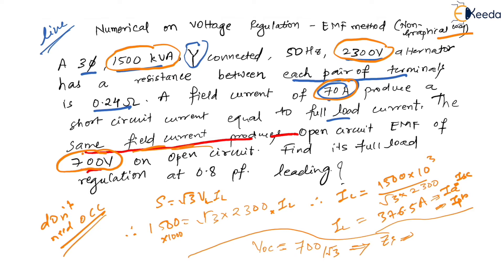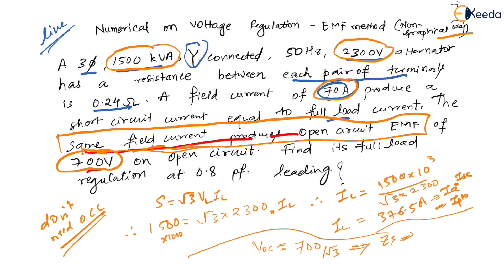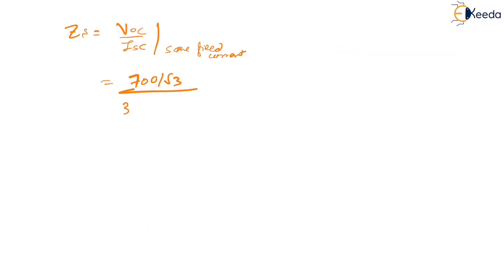If that sentence about 'same field current' were not there, we would need the OCC characteristics. But since it is given, we can proceed directly. Also, note that for a star connection, line current equals phase current, so we do not divide ISC by √3. ISC remains 376.5 amperes as the phase current.